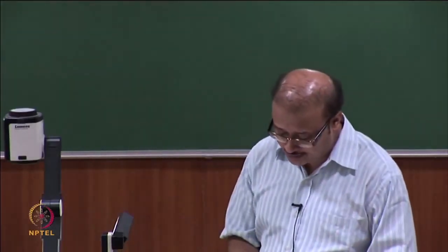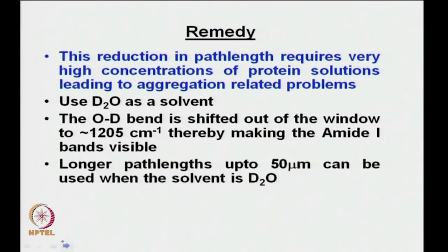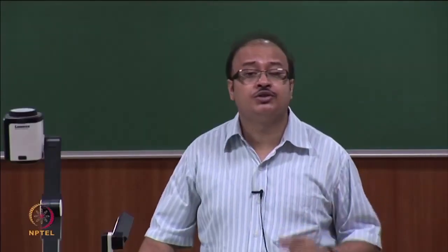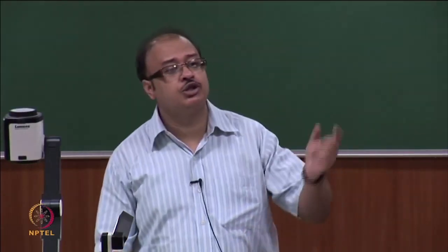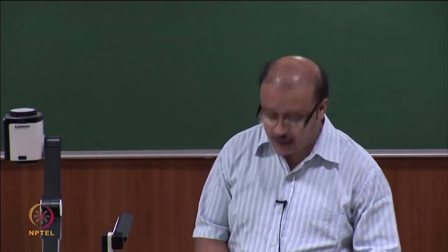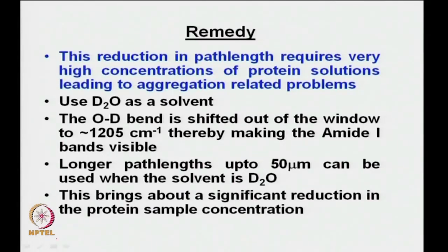The remedy is to use D₂O as solvent. The OD bending mode is shifted to about 1205 cm⁻¹, far out of the amide 1 window, making the amide 1 band visible and unmasked. Longer path lengths up to 50 micron can be used with D₂O, allowing smaller protein concentrations, proper background subtraction within the detector's linear range.